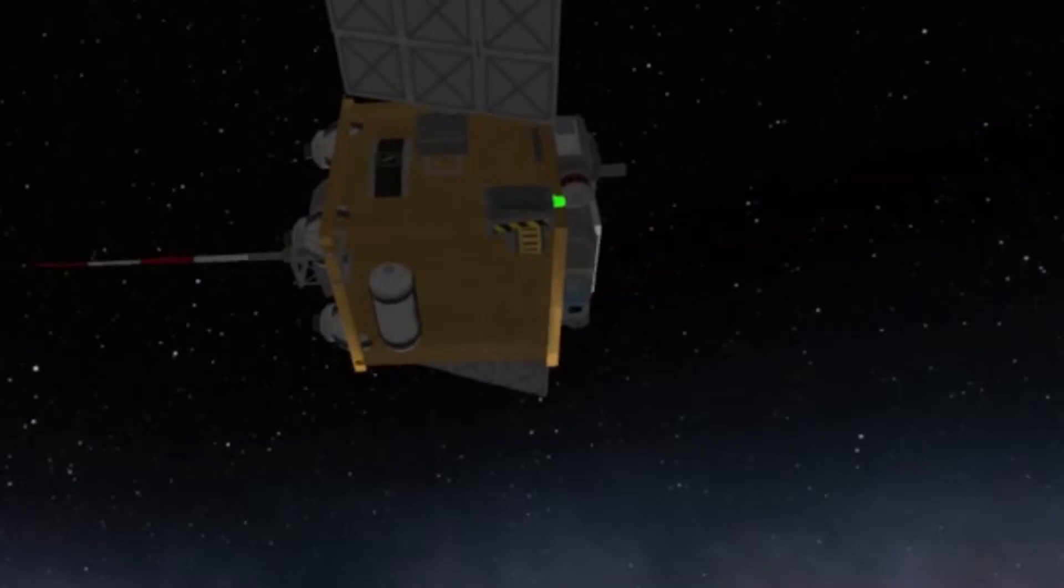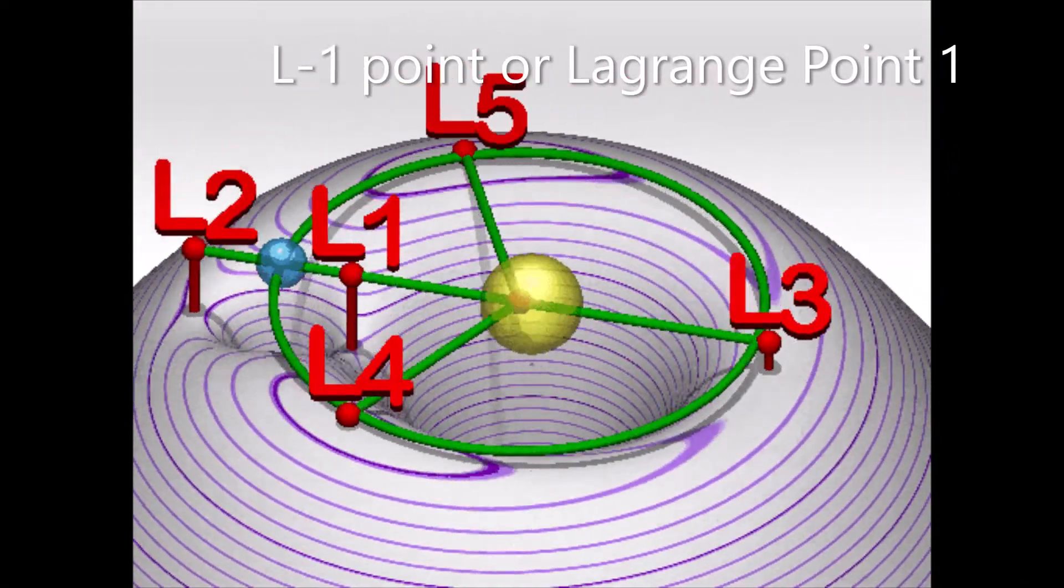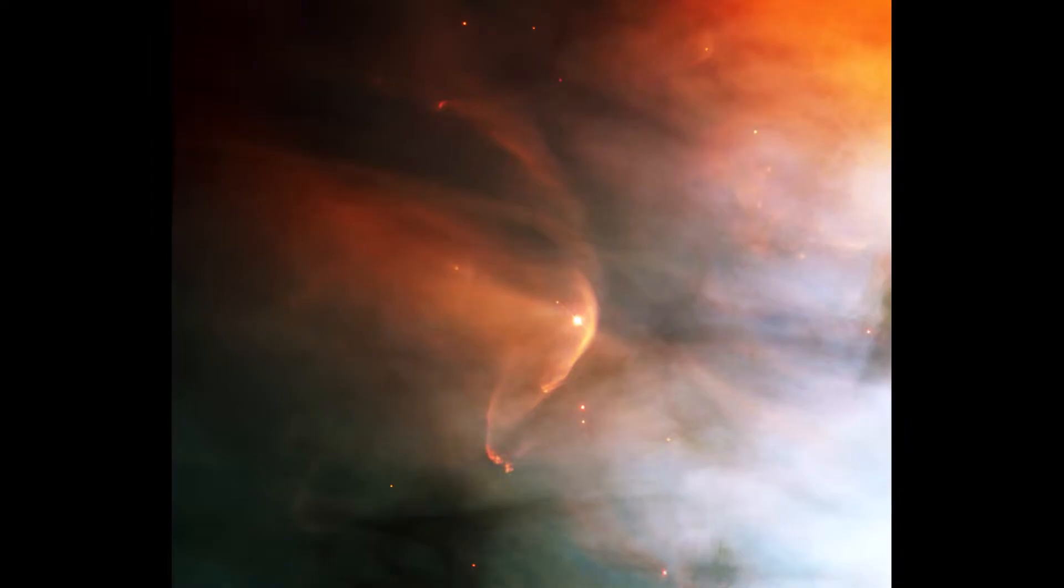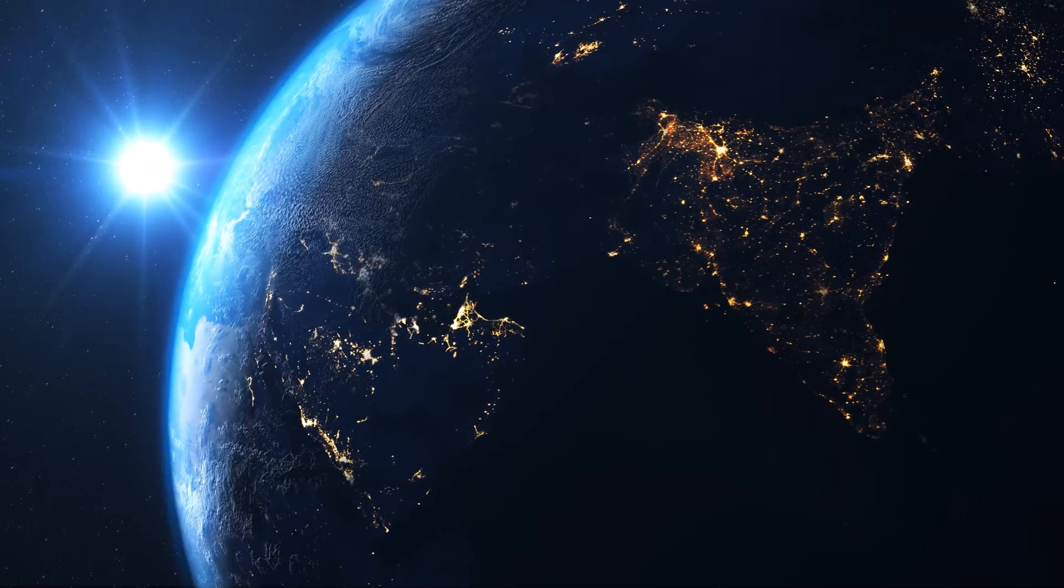It is the solar observatory which will be inserted into a halo orbit around Lagrange point 1 between Sun and Earth where it will study solar atmosphere, solar magnetic storms and its impact on Earth's atmosphere.